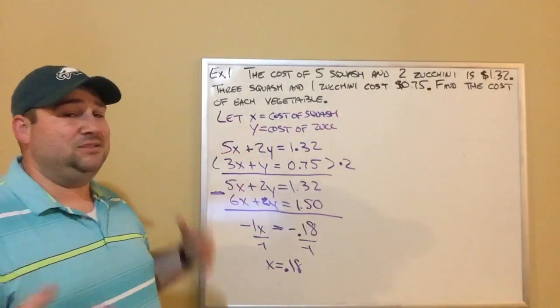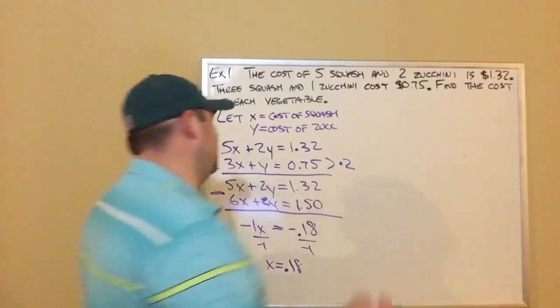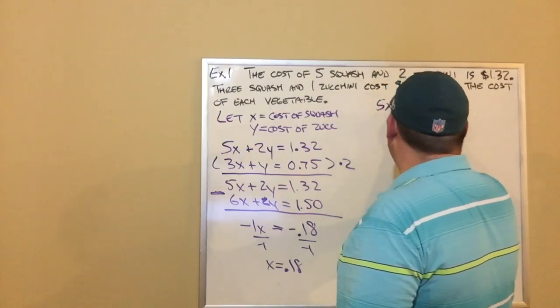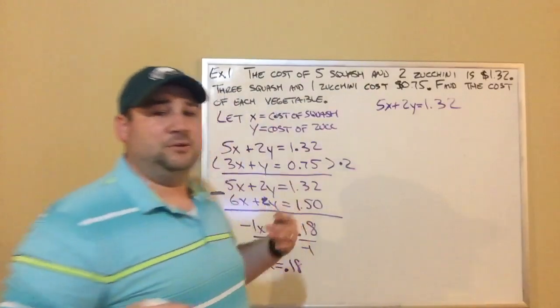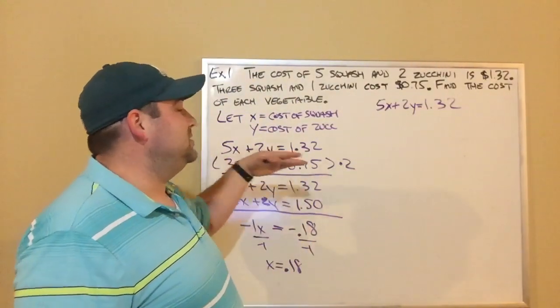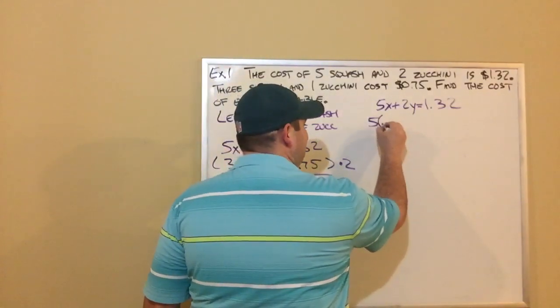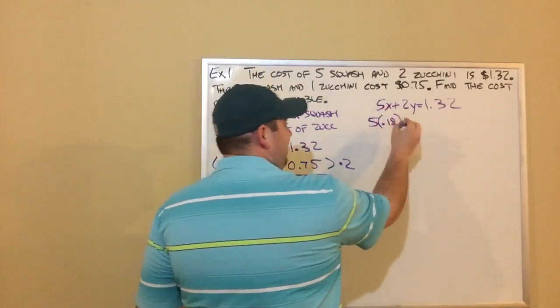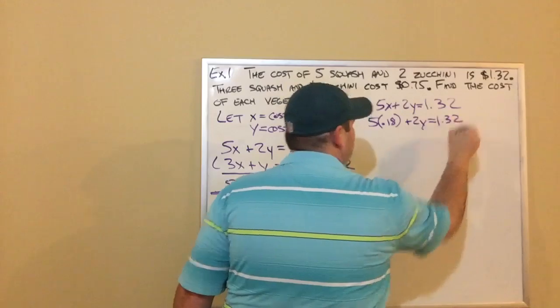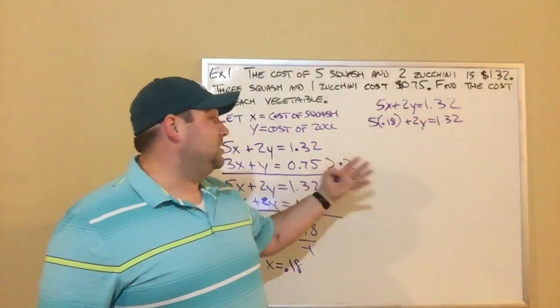It doesn't matter which one. Let's just pick the first one. So the first equation was 5X plus 2Y equals $1.32. I'm standing in front of the board. Sorry. The whole video thing is weird. So 5X plus 2Y equals $1.32. I know X equals 18. So I put it in place of the X. So where the X was, I got the 0.18. So that's still plus 2Y, still equals $1.32.